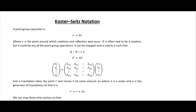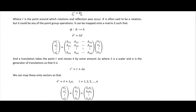A point group operation looks like this, where we have the capital R operation acting on a point and bringing us to a different point. R can be a rotation, a reflection, or anything like that — R is the point around which the rotation or reflection axes occur. R is often said to be a rotation but it could be any of the point group operations, and we can map these from point group operations to matrices.